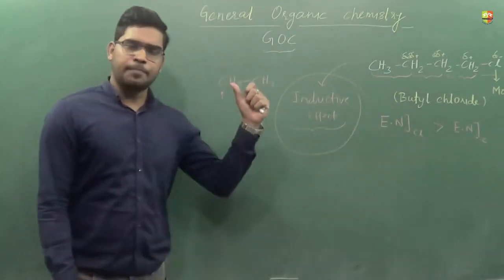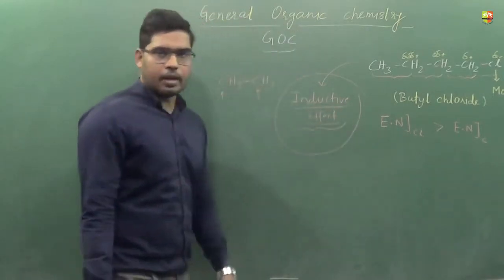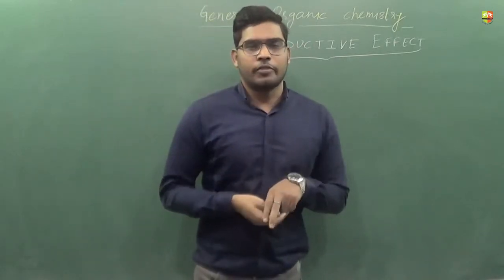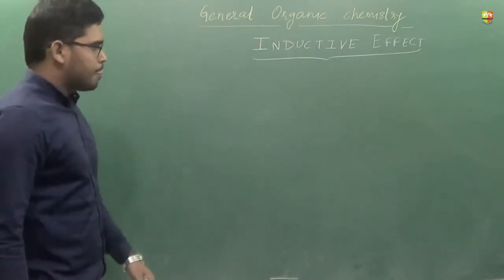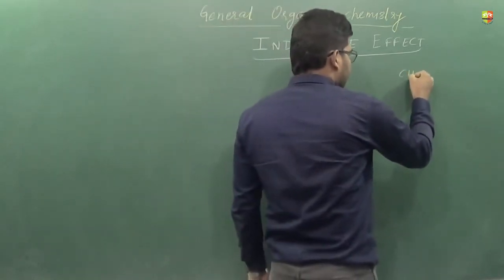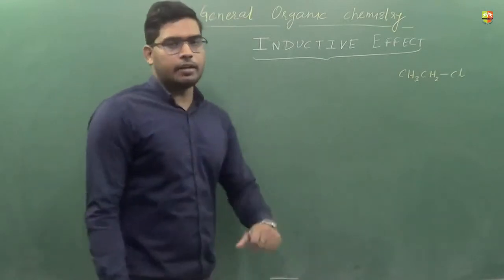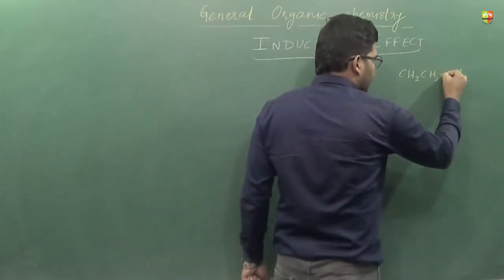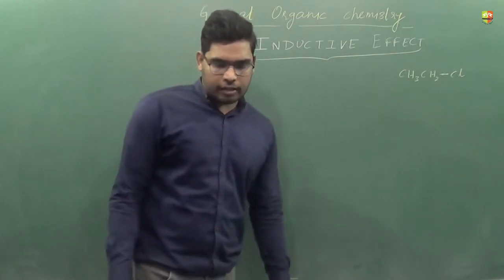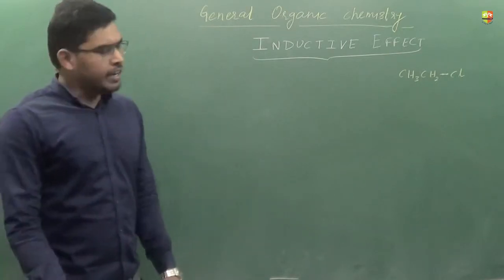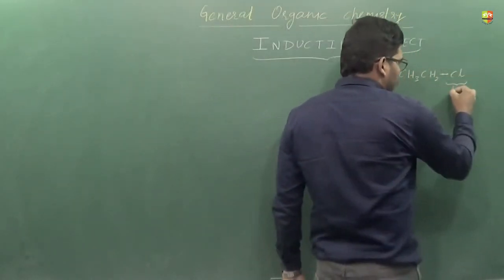So we will start with the first electronic effect, which is inductive effect. Consider the example of CH3CH2Cl. What happens in this molecule is that the chlorine atom drags the bond pair of electrons towards its side because it is more electronegative. This particular group — chlorine — has electron withdrawing tendency.